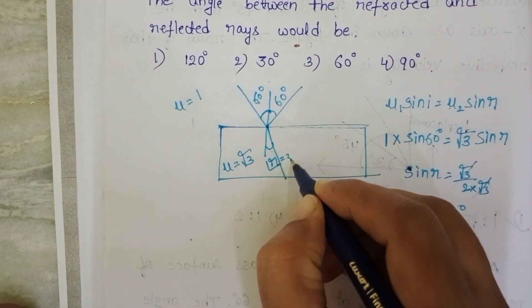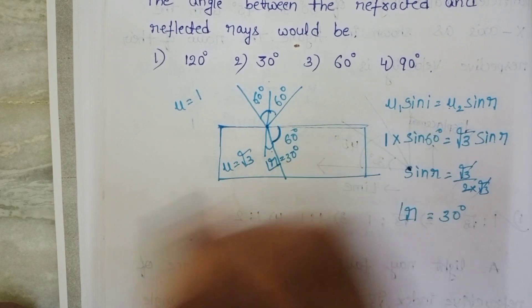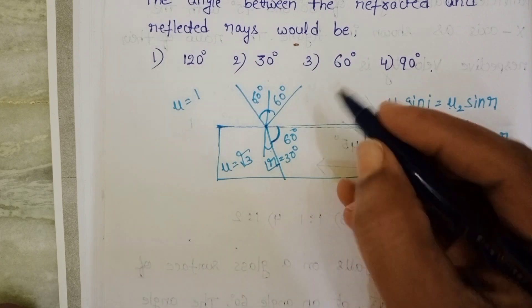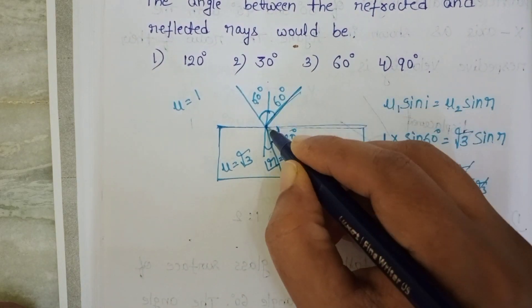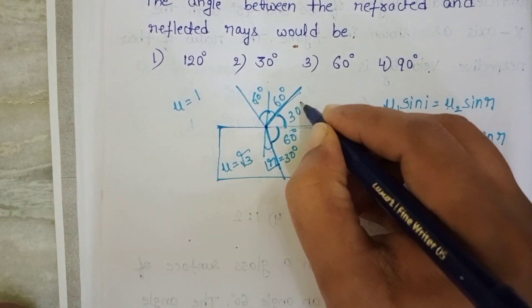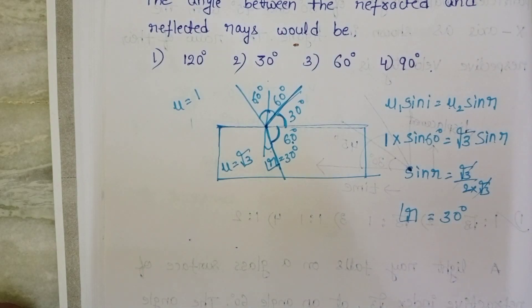Now this value is 30, then this part becomes 60 degrees. Here we want angle in between reflected ray and refracted ray. This angle is 30 degrees and this angle is 60 degrees. So the angle between reflected ray and refracted ray equals 90 degrees.